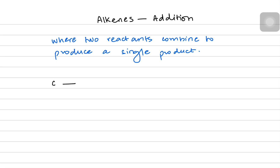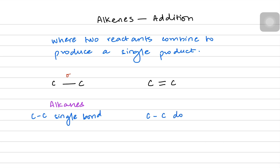Addition reactions mostly involve breaking a pi bond. When we talk about alkenes and their pi bonds, we know that alkanes have a carbon-carbon single bond, which is only the sigma bond. But when we talk about alkenes, there's a carbon-carbon double bond, which consists of a sigma bond and a pi bond.